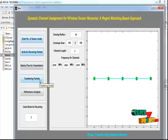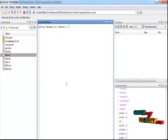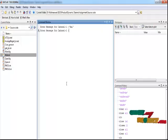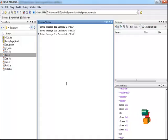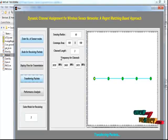Now by pressing the Transferring Packets button to perform the packets of transferring, here we need to enter the message for channel 1. And now we have to enter the message for channel 2. Now we have to enter the message for channel 3. Totally we have used 3 channels.